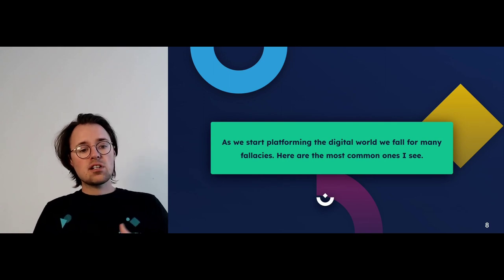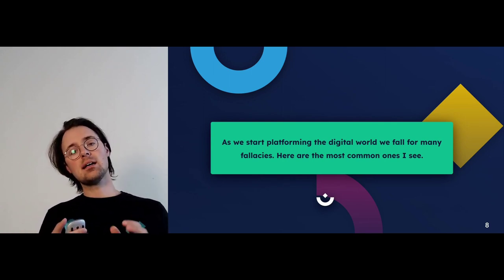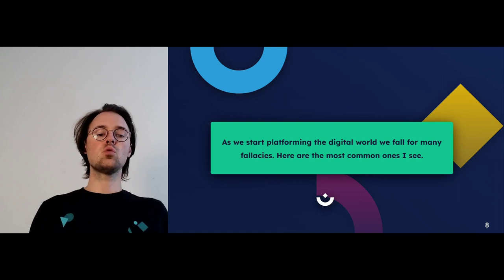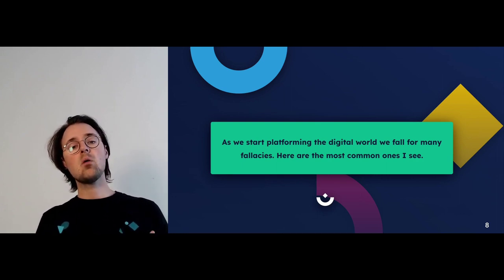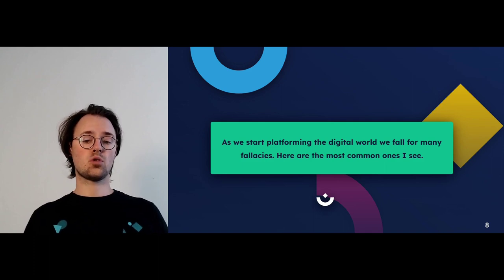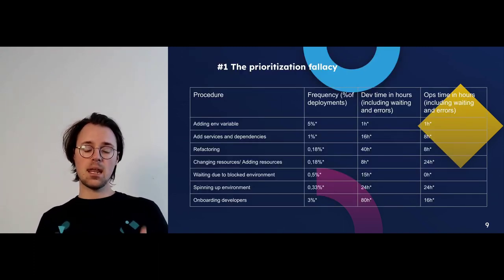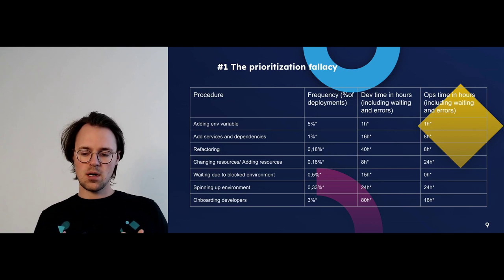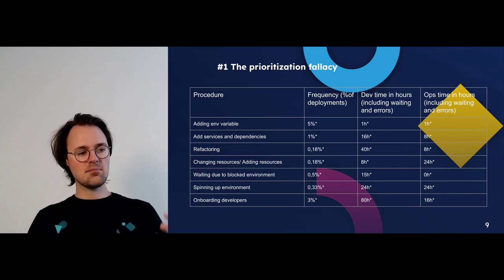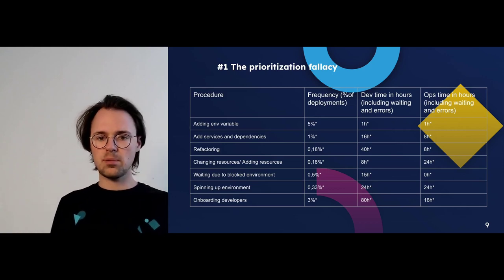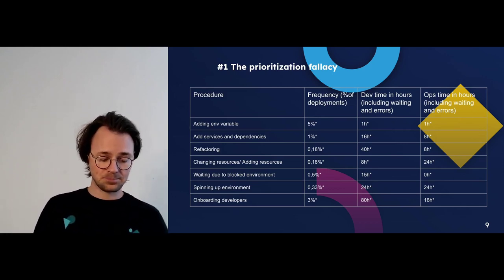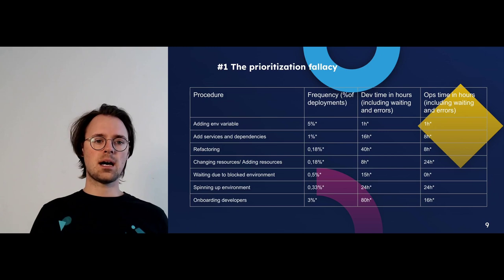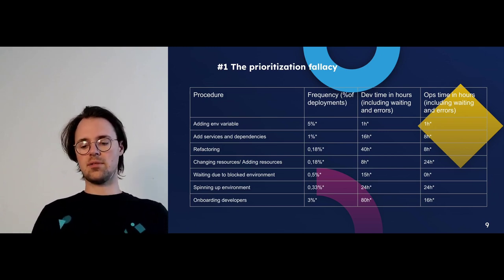As we're now starting to platform the digital world, we are seeing more and more consistent fallacies that teams run into. Number one is the prioritization fallacy. You're starting your platforming journey, you're convinced you have to take control of your platform, and you want to build your first golden path and reduce cognitive load for your developers. But how do you choose where to start? There are so many elements — configuration management, developer onboarding experience, creation of a new service.